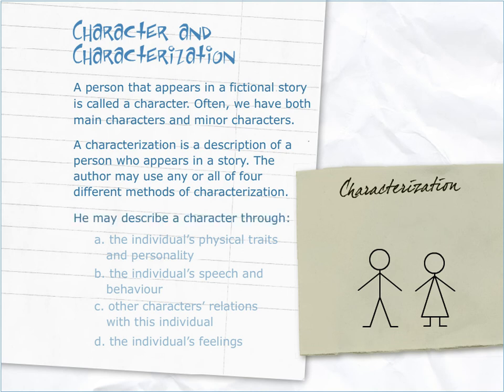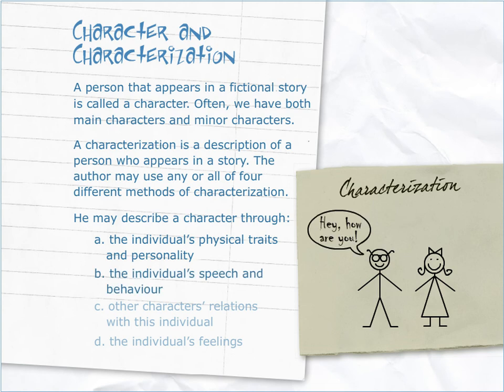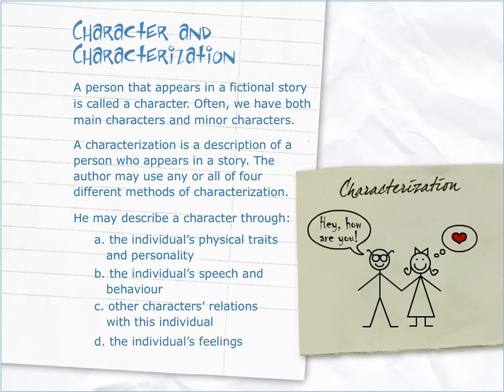The author may describe a character through: the individual's physical traits and personality, the individual's speech and behaviour, other characters' relations with this individual, and the individual's feelings.